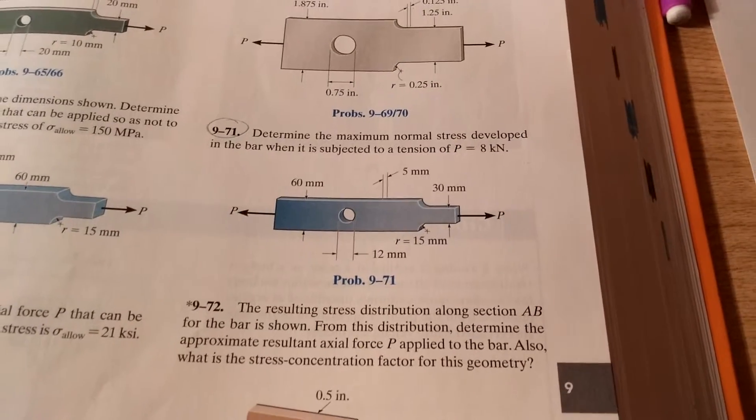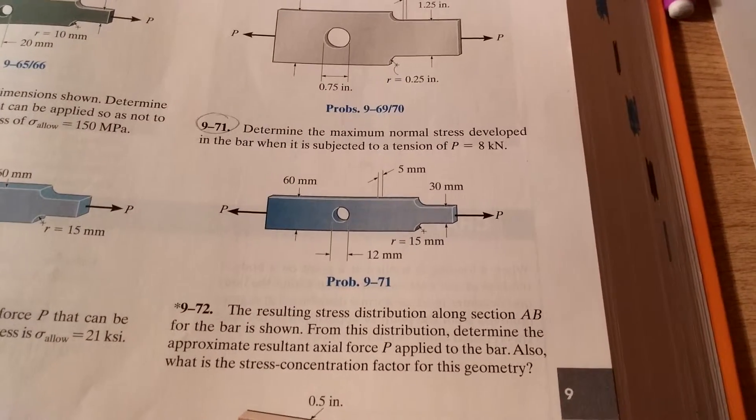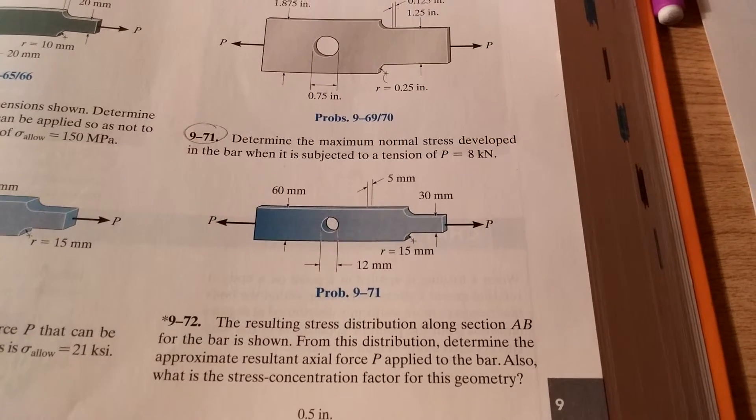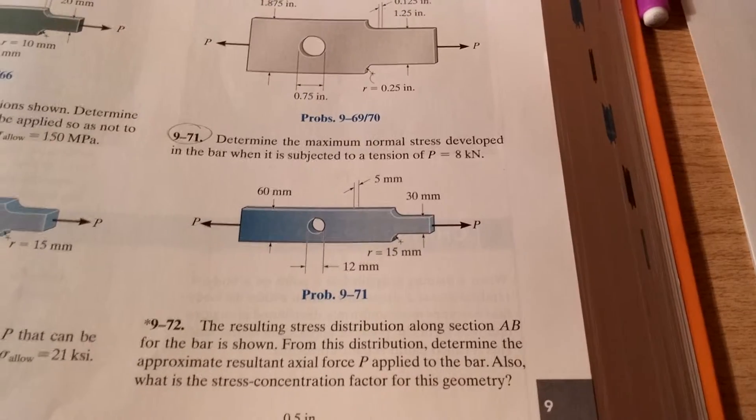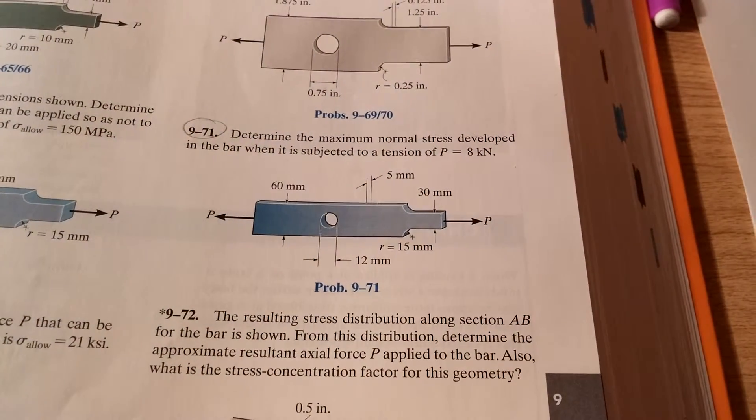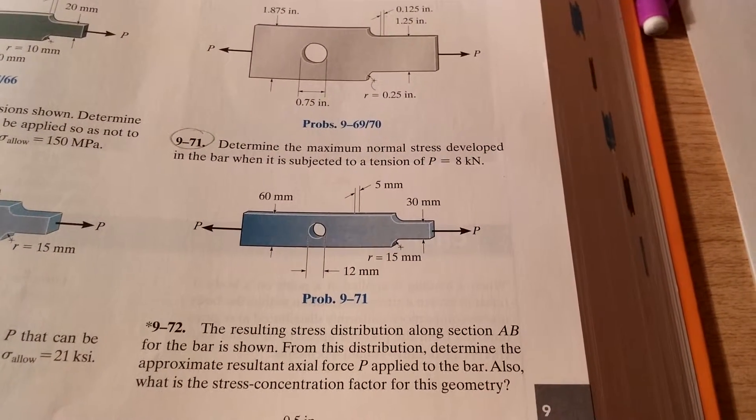Alright, so let's do problem 9-71. We're given this figure with the hole cut out and it gets skinnier at the end with axial loads of P equals 8 kilonewtons on each end. And we have to find the maximum normal stress developed in the bar under that load.